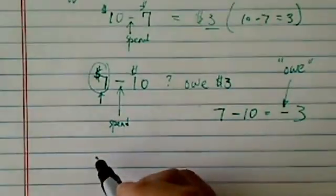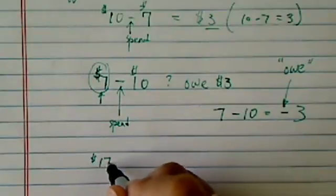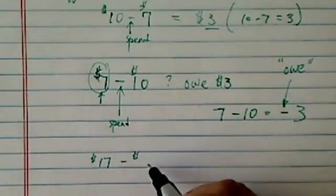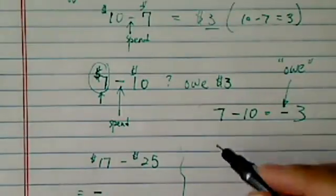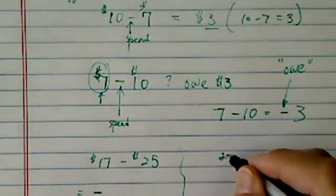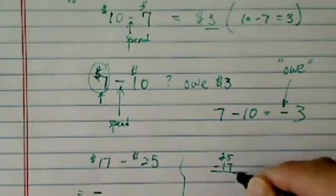So let's take another example. What if you had $17, but this time you spent $25. So how do we do that? Obviously, we know we're going to owe money, so we're going to put a minus sign in front. And then what we do from here is we actually subtract 25 to 17.